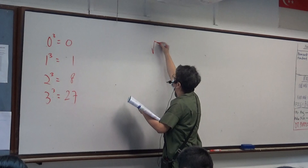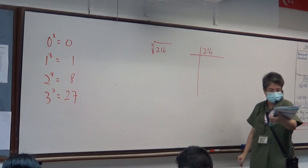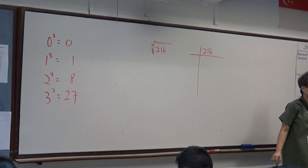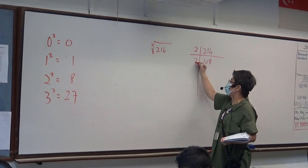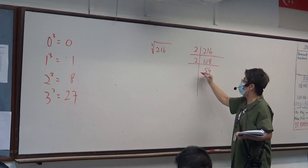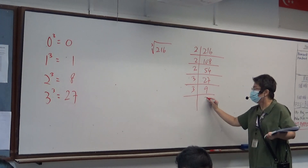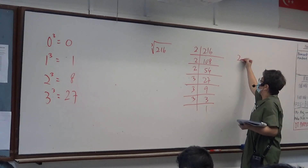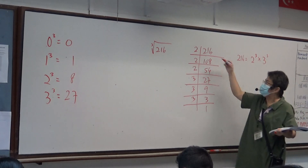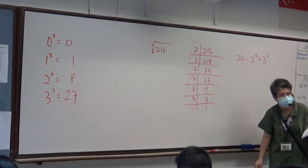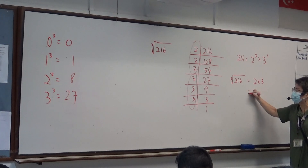Can you look at this one? Find the cube root of 216. Let's do 216 first. 216 divided by 2 is 108. 108 divided by 2 is 54. 54 divided by 2 is 27. 27 divided by 3 is 9. 9 divided by 3 is 3. 3 divided by 3 is 1. So 216 is 2 cubed times 3 cubed, right? For cube root, every three same numbers we take up once. So the cube root of 216 is just 2 times 3 = 6.